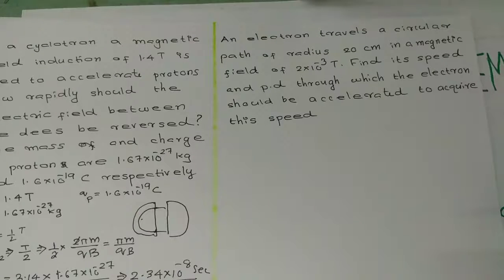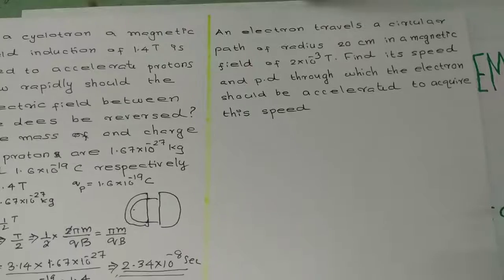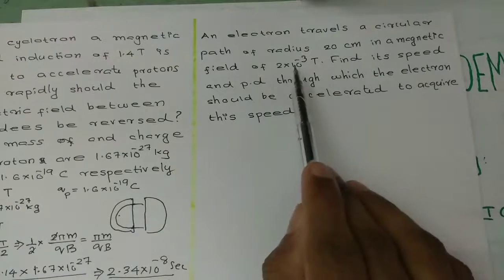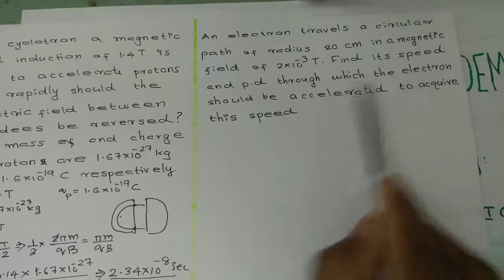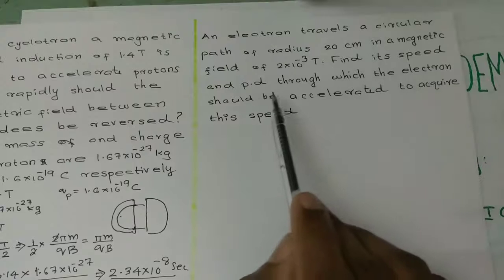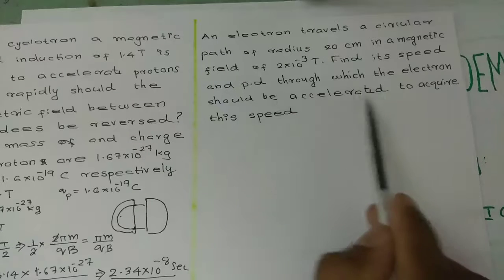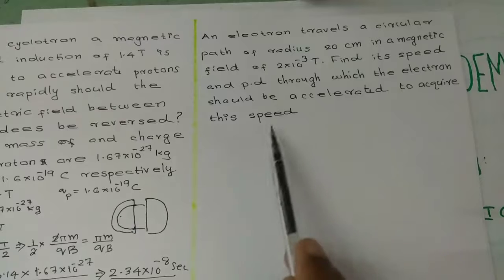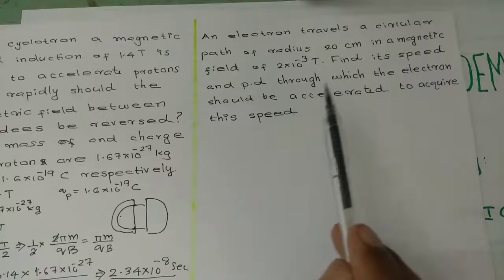Next question: an electron travels a circular path of radius 20 centimeters in a magnetic field of 2×10⁻³ tesla. Find its speed and the potential difference through which the electron should be accelerated to acquire this speed.